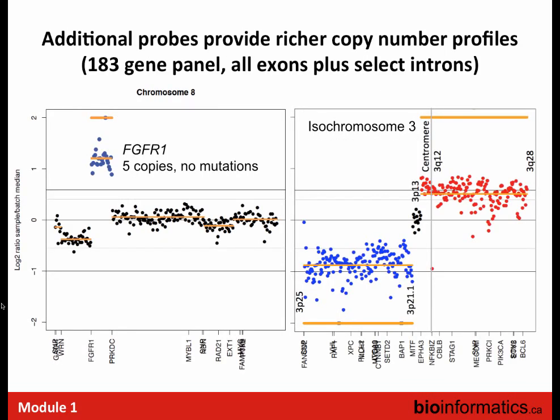These copy number alterations become increasingly rich as we add additional probes, and going to exome and genome sequencing the resolution becomes even more clear. Here, a very clean gain of FGFR just on its own with the rest of the chromosome intact. From these targeted panels you can also start to act like a cytogeneticist: in this case all of the p arm is completely lost and the q arm is actually gained. This is indicative of an isochromosome — where you've lost one piece of the chromosome and the other piece has been duplicated, so you have what appears to be a regularly sized chromosome but one arm is composed of genetic material from the other — and this is actually diagnostic of specific cancer types.